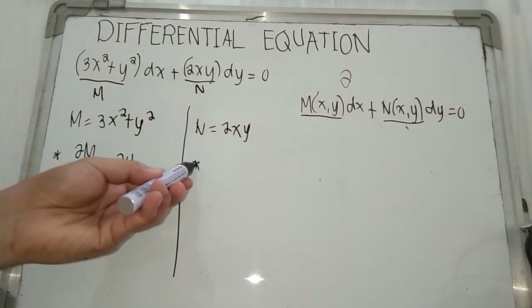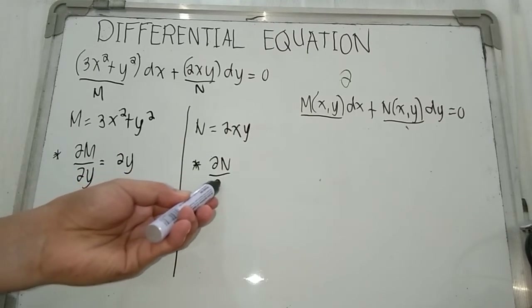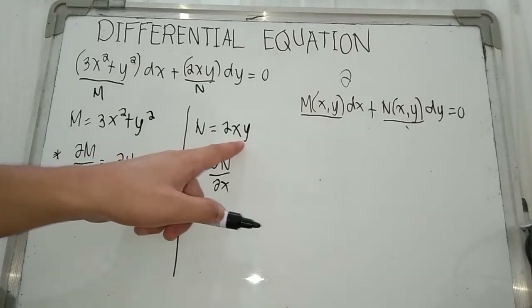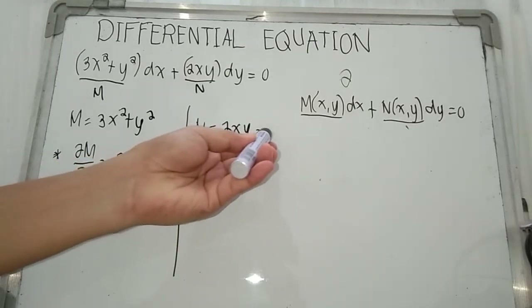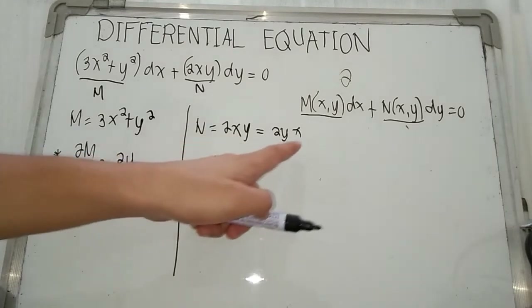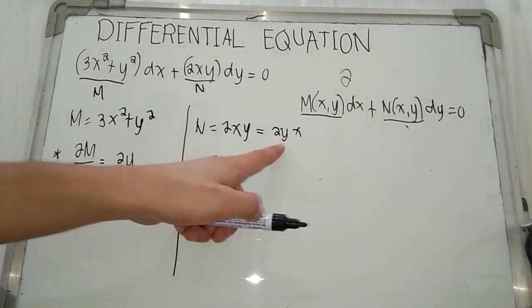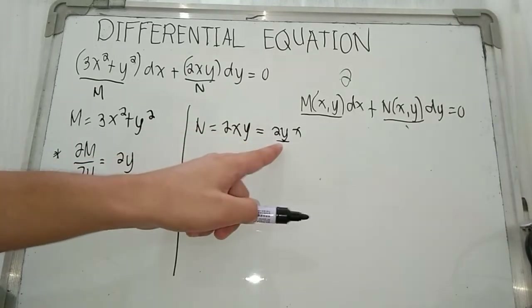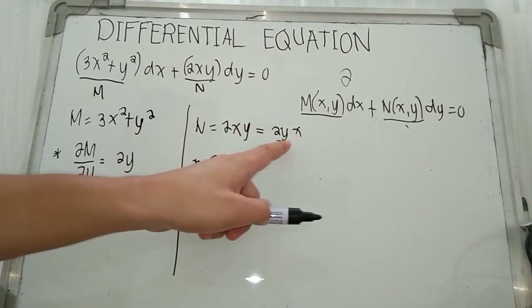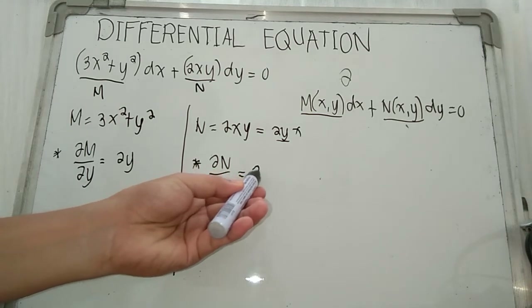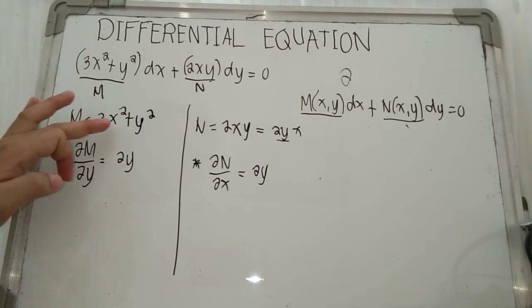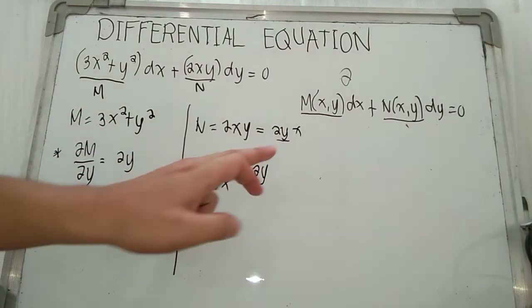Next, we get the partial derivative of N with respect to x. At this point we treat y as a constant. So 2xy can be written as 2yx by commutativity of multiplication. Treating y as a constant means 2y is a constant, and the derivative of a constant times x is just that constant, which equals 2y.